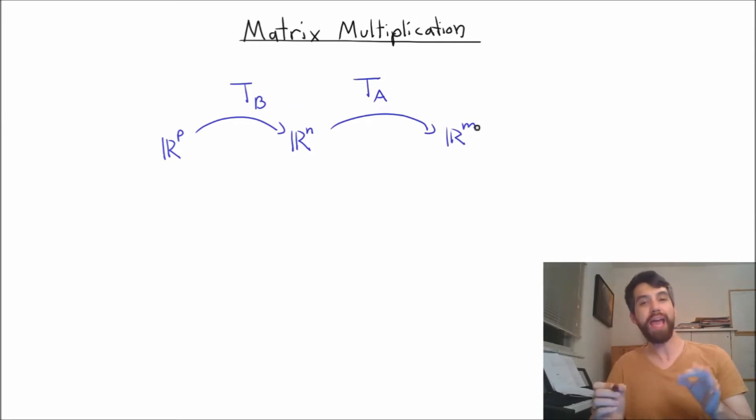And what I have here is composition of transformations. I start in some initial domain R^p, I go to some intermediate R^n, and then I go all the way to R^m.